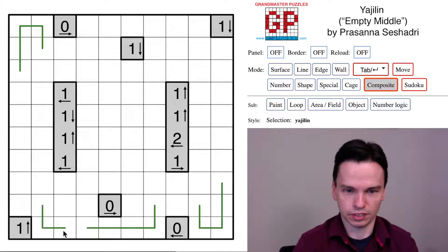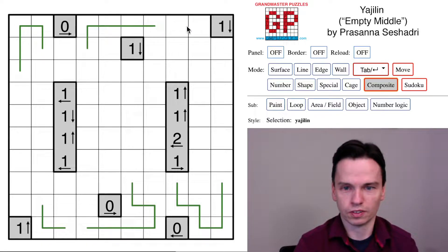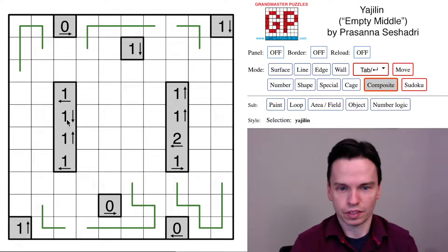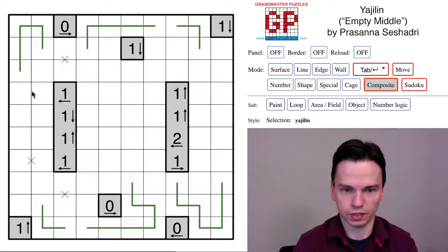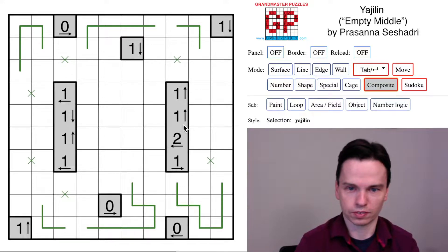These zero clues feed a lot of the grid right at the start, and the zero right clue forces this loop end to turn and corner. Similar constraints based on this zero right clue. We can mark some spaces which will have one of these two cells shaded—the one-up clue, the one-down clue, and these one-left clues. Mark cells like this, also this from the one-ups.